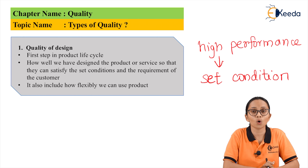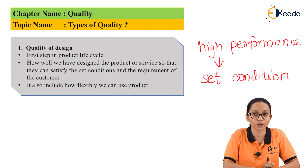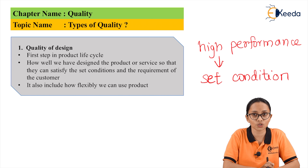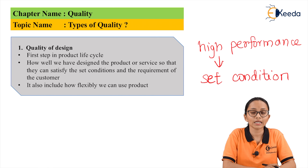Quality of design does not only mean how well the product satisfies the set conditions and requirements; it also means how the designed product can be used at a different set of conditions and requirements. For example, a drawing tolerance of plus and minus 0.002 mm would be considered to have a better quality of design than another with a tolerance of plus or minus 0.02 mm, as the working range with 0.002 mm is much more efficient.